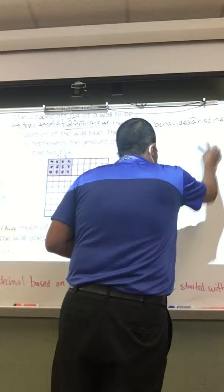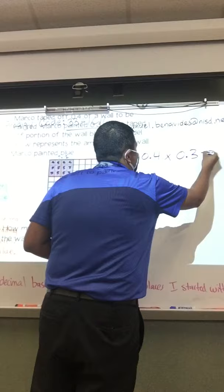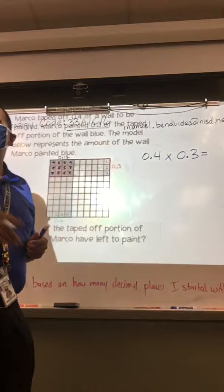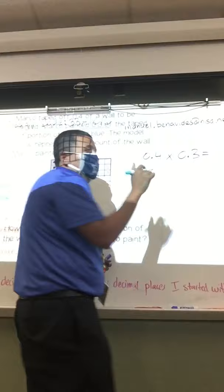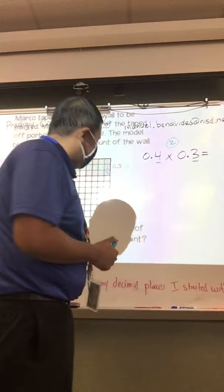So let's take a look at the algorithm and follow our steps. The problem was four-tenths times three-tenths. What's step number one? Count my decimal places. We should all be doing this. If I'm writing, you're writing. How many decimal places do I have in the entire problem? Two. I have one here and one there. The whole numbers are not decimals. So I want to see everybody write this example down so you can see how the model goes with the algorithm.